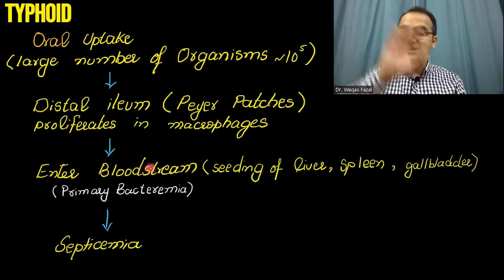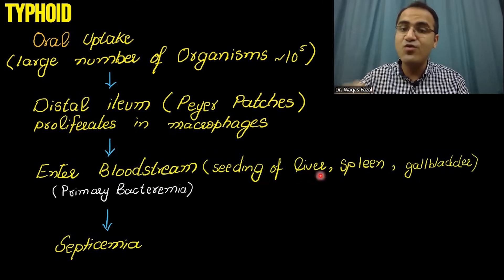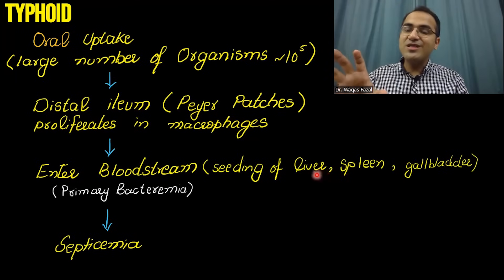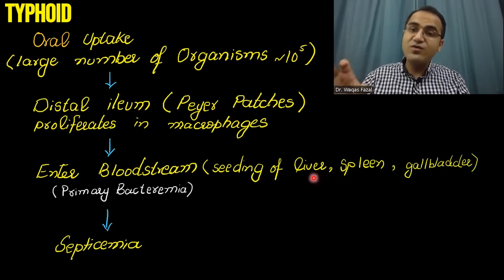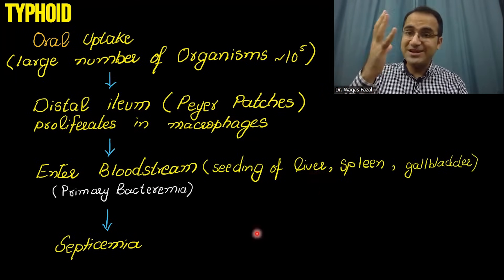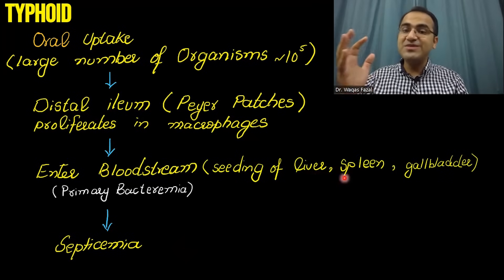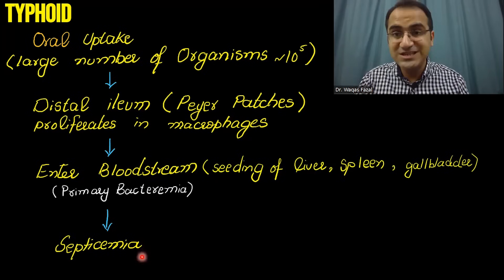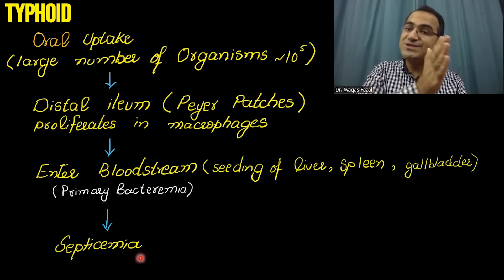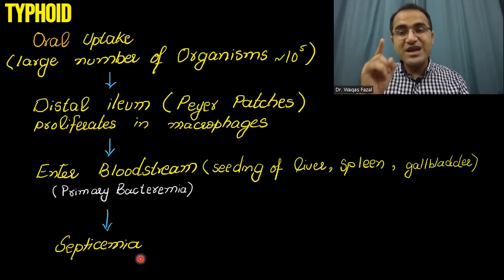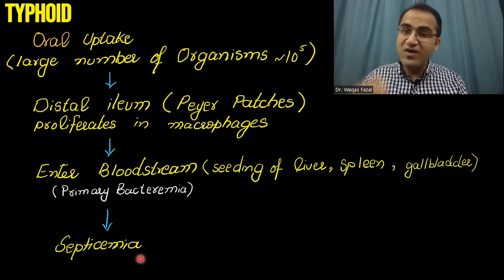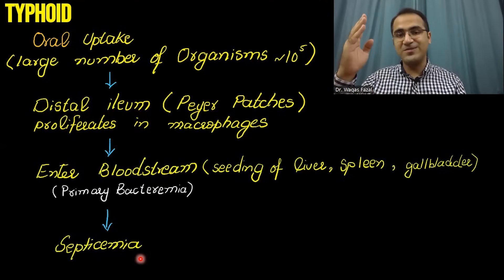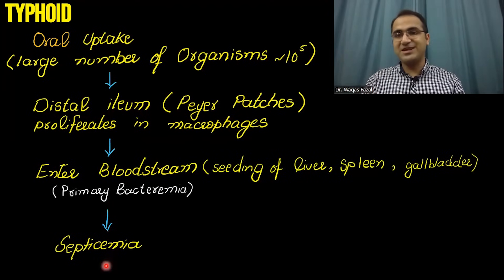When circulating in the bloodstream, the bacteria reside in the liver, spleen, and gallbladder. After residing there, they cause secondary bacteremia, again entering the bloodstream and resulting in sepsis and septicemia. This is the pathogenesis of typhoid. Remember, typhoid is not an illness confined to the GI tract — it's a systemic illness that spreads throughout the body via primary and secondary bacteremia.